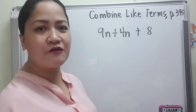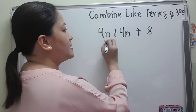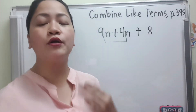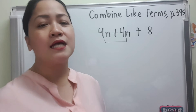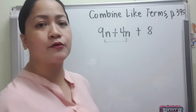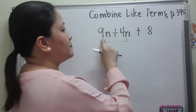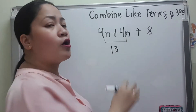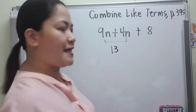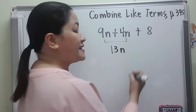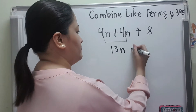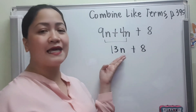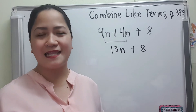We cannot combine 8 with them since 8 is a numerical term — it doesn't have a variable with it. So for 9n plus 4n, just add or combine their numerical coefficients, the numbers beside the variables. We have 9 plus 4 is 13, and then the common variable is n, so that will be 13n plus 8. We cannot combine 8 with 13n because they are not like terms.